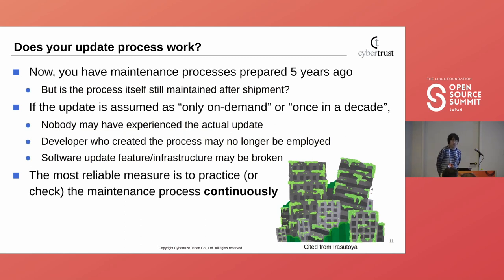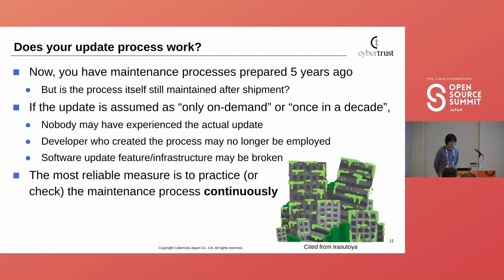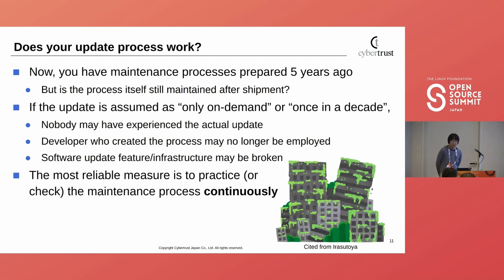The next point to be checked is: does your update process work? You may have a maintenance process prepared five years ago, but is the process itself still maintained after shipment? If the update is assumed as only on-demand or once in a decade, then nobody may have experienced the actual update, or the developer who created the process may no longer be employed, or the software update feature or infrastructure may be broken. We need some kind of measures. The most reliable way is to practice or check the maintenance process continuously. Periodical practice will prevent these problems.